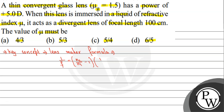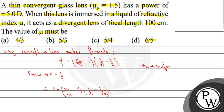Here R1 and R2 represent the radii of curvature. n1 and n2 are refractive indices, and f is the focal length. If we talk about the power and focal length relation, then power P = 1/f. So we can write P = (n2/n1 - 1)(1/R1 - 1/R2).